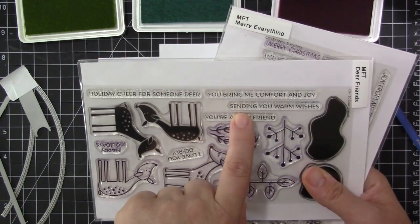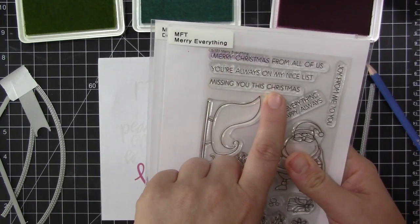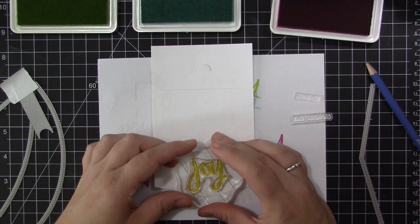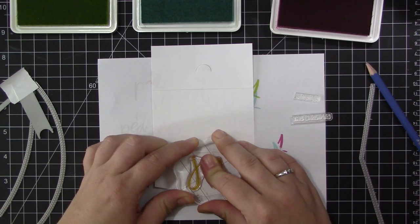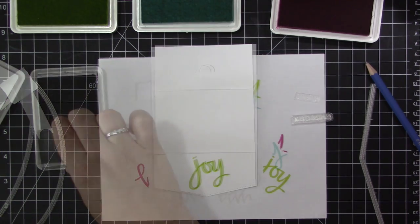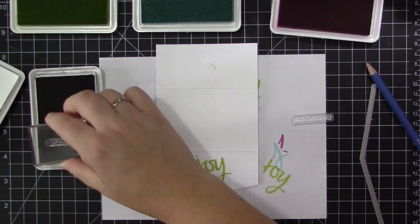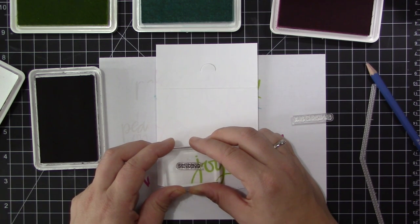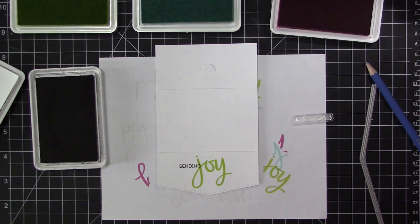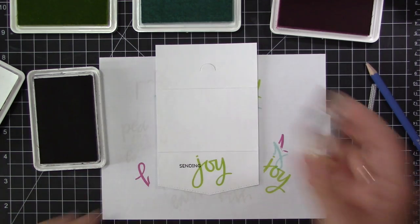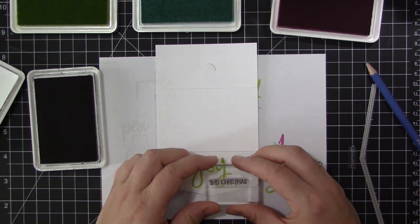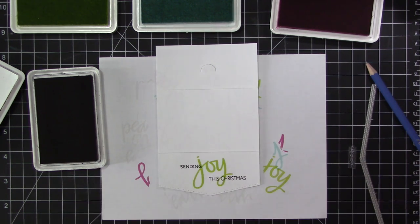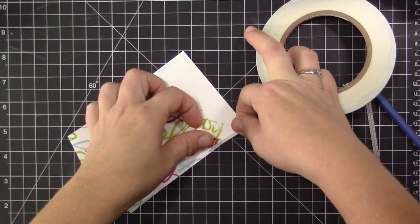Once I have all the words stamped, I'm going to pick out some sentiments for the front of the gift card holder. I'm using the same 'joy' word in Limelight ink, and I picked two sentiments, one from the Dear Friends stamp set and one from the Merry Everything stamp set. I only wanted to use part of each sentiment, so I cut them apart. I first stamped the word 'sending' with black ink right on the side of the word 'joy', and now I'm overlapping 'Christmas' over the Y to have a full sentiment that says 'sending joy this Christmas.'